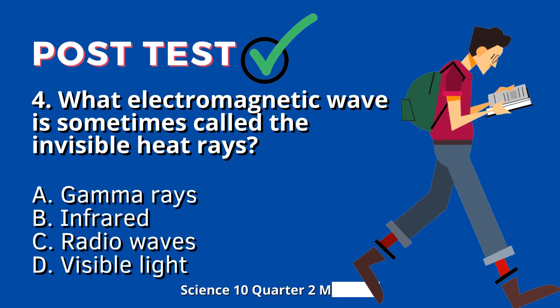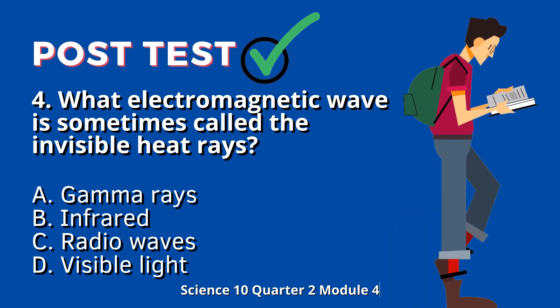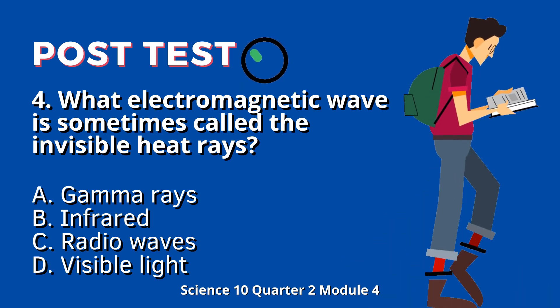Question 4: What electromagnetic wave is sometimes called the invisible heat rays? A. Gamma rays. B. Infrared. C. Radio waves. D. Visible Light.